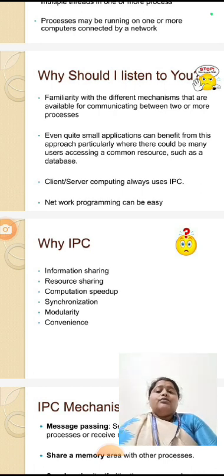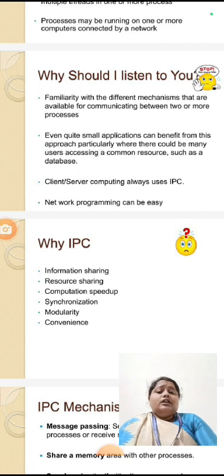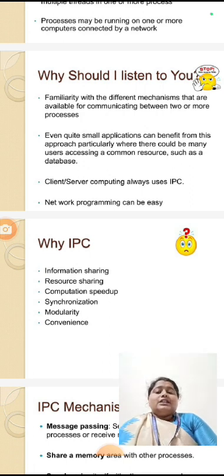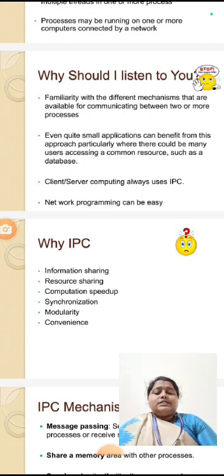Network programming can also use inter-process communication, which makes communicating between programs easier. There are four main similarities. First, it is used for communicating two or more processes. The second benefit is it is used for database and common resource sharing. Third is client-server computing. And the fourth is it is used in network programming.